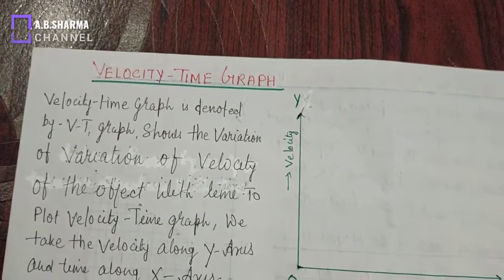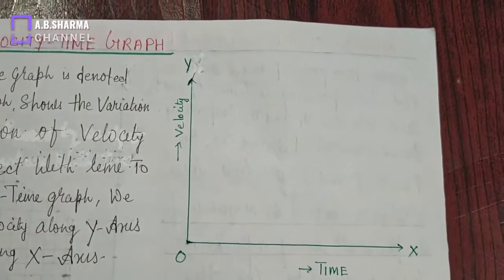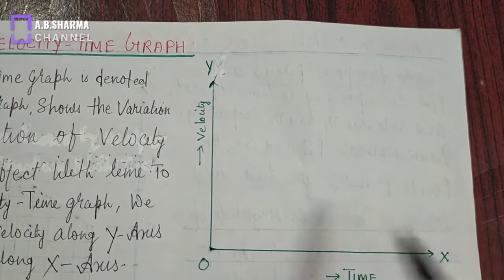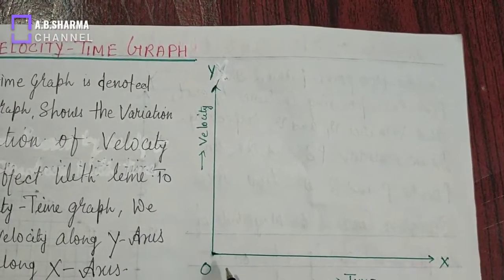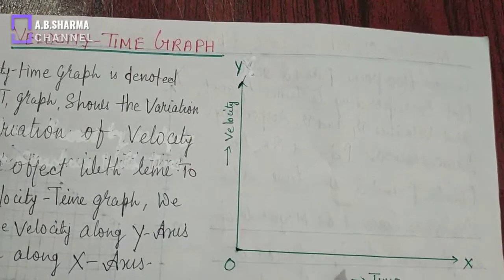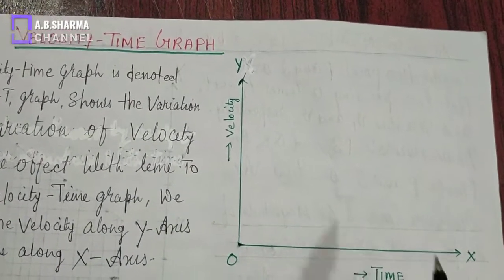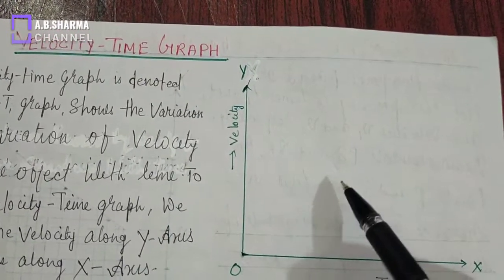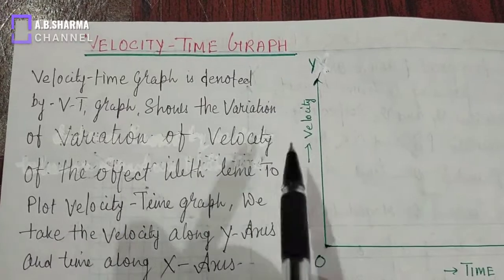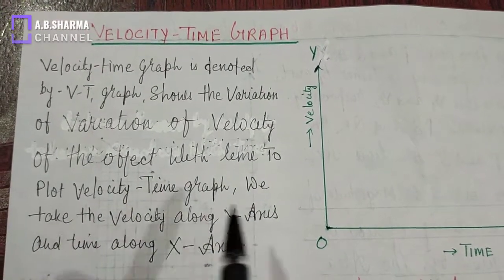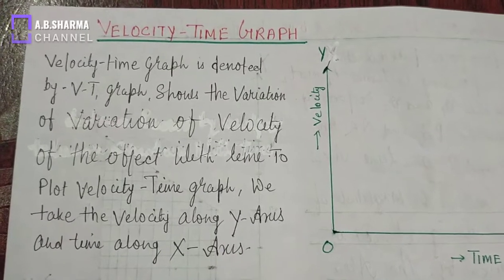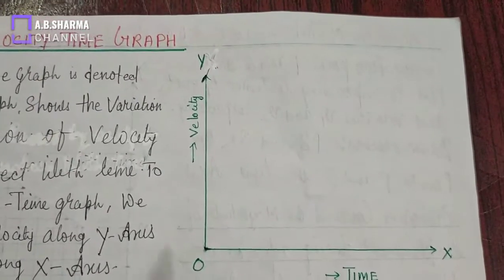Now in this part of the video I have brought the velocity time graph for you. See the graph first — time is taken along the x-axis and velocity is taken along the y-axis. This is the origin, and the velocity time graph shows the variation of velocity of an object with time. It is denoted by the Vt graph. To plot a velocity time graph, we take velocity along the y-axis and time along the x-axis.